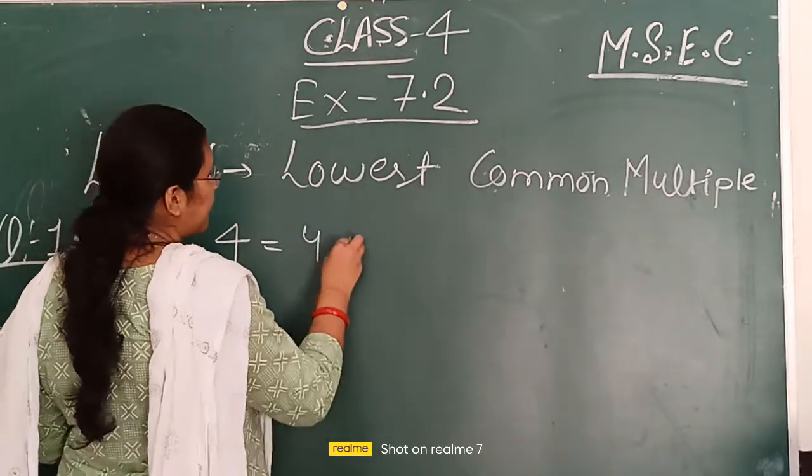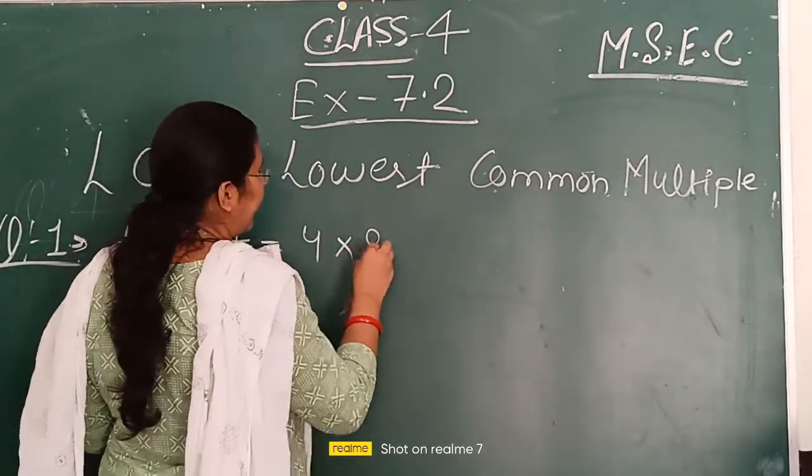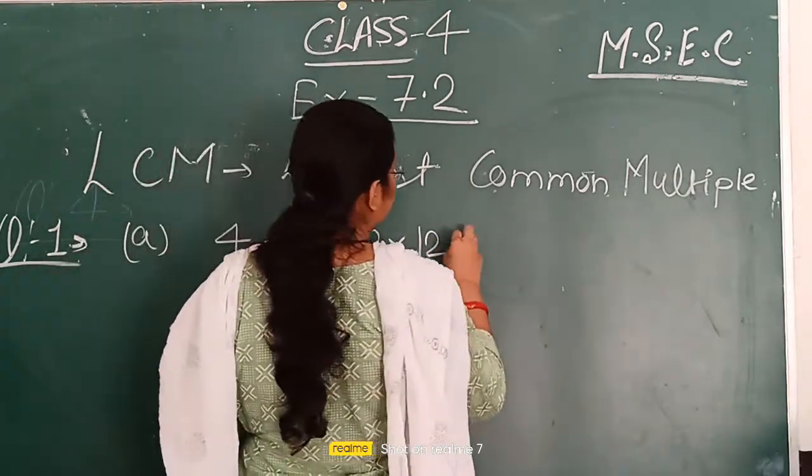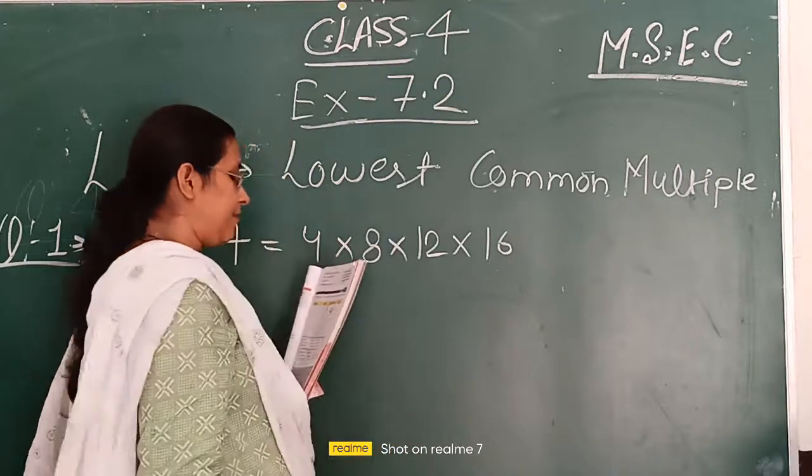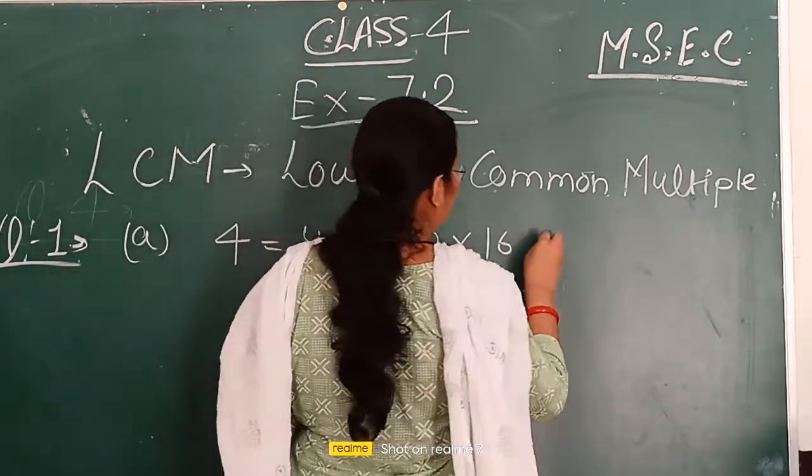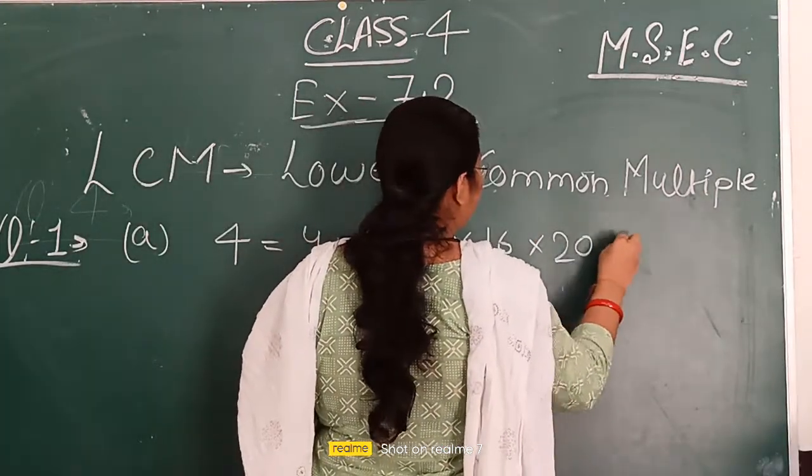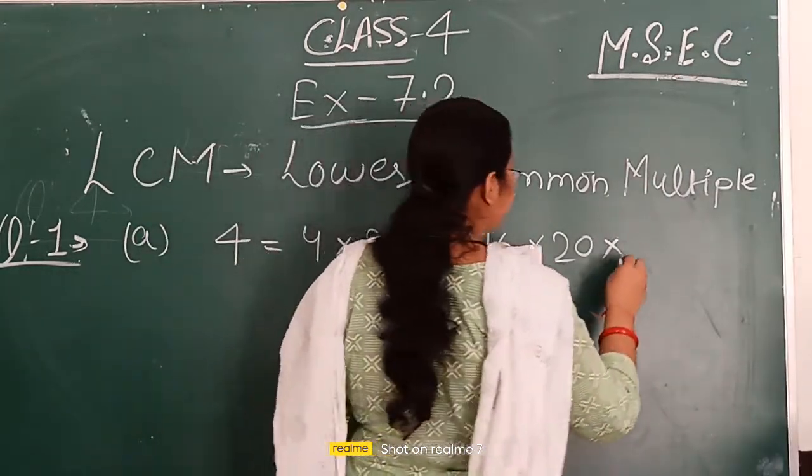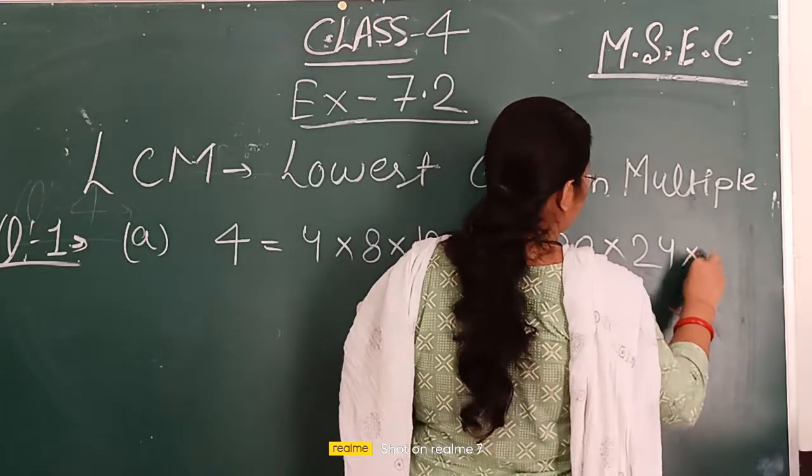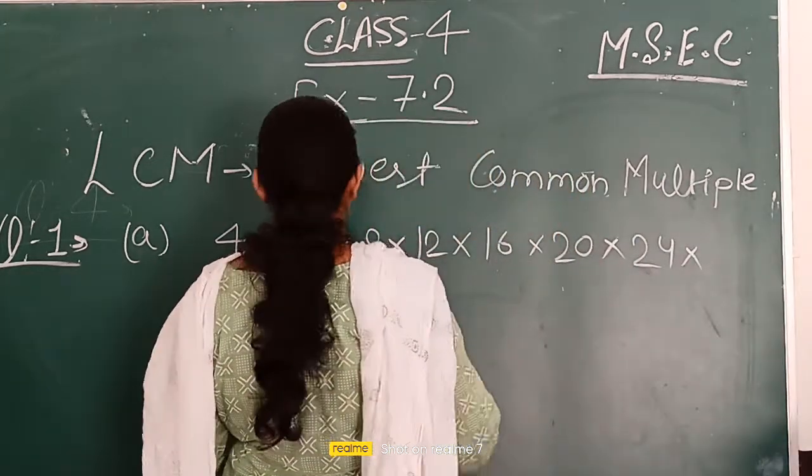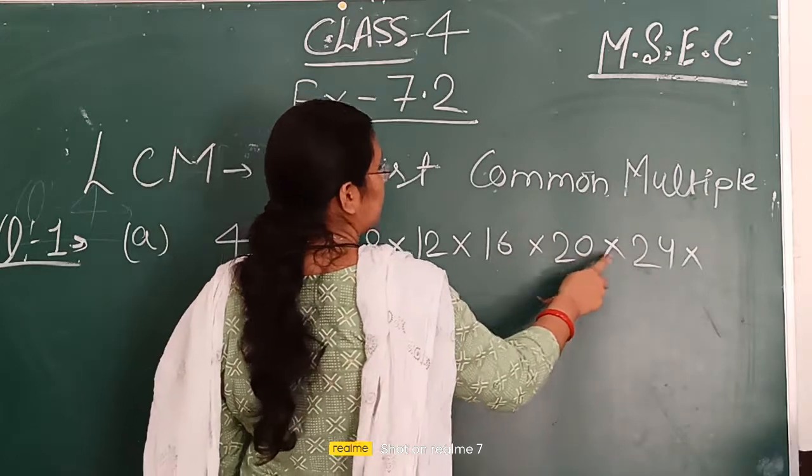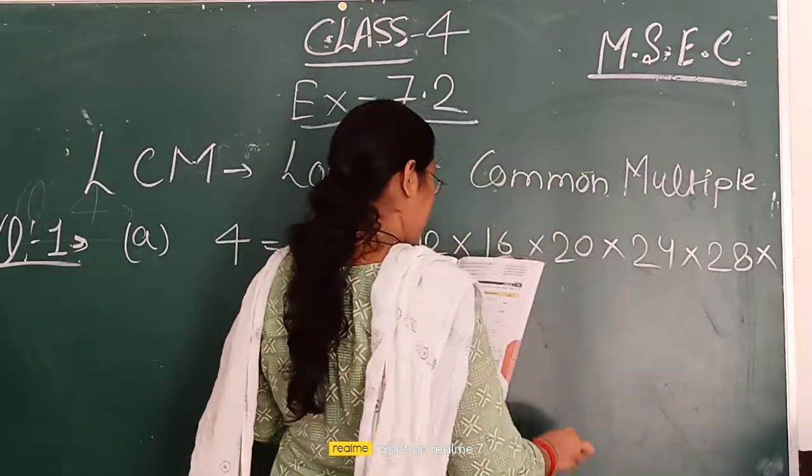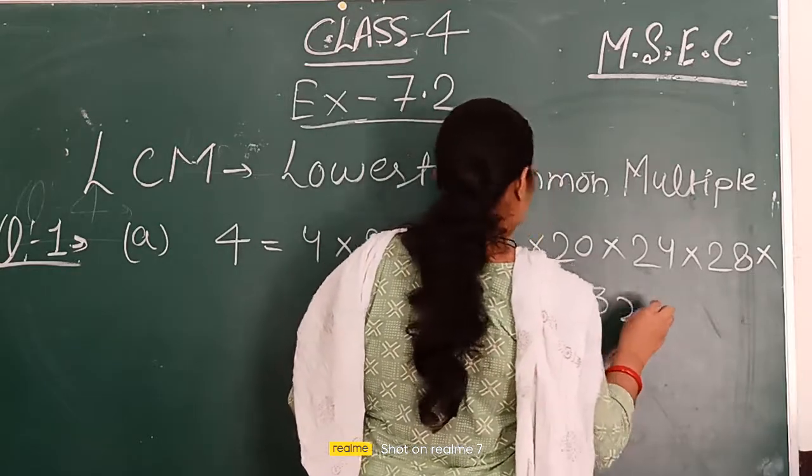Now this is 4. The multiples of 4 are: 4, 8, 12, 16, 20, then 24.